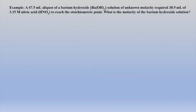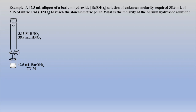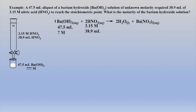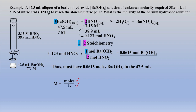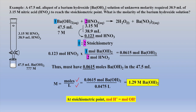In this example problem, we are asked to deduce the molarity of the barium hydroxide solution given the volume and concentration of acid required to complete the neutralization. Converting volume and concentration to moles nitric acid will allow one to deduce moles barium hydroxide present. In this neutralization reaction, two moles of nitric acid are required to neutralize one mole of barium hydroxide. Thus, there are 0.00615 moles of barium hydroxide within the 47.5 milliliter aliquot, and with moles and volume known, the final molarity may be calculated. The key is the stoichiometric relationship between acid and base at the equivalence point.